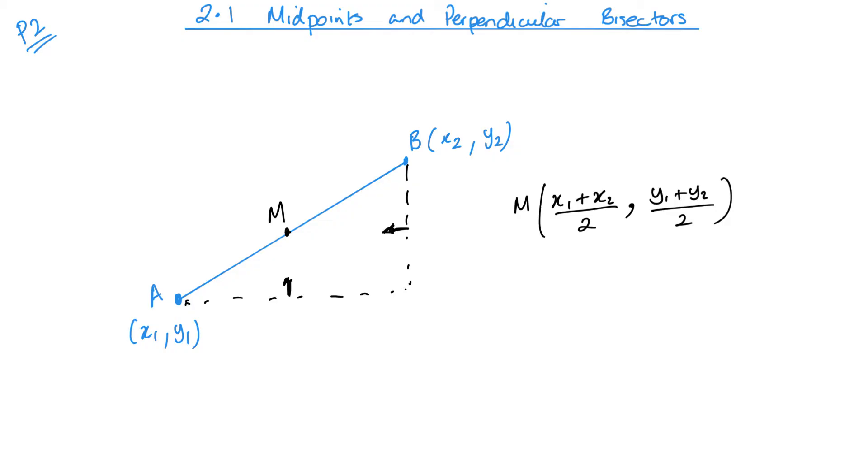Now, a perpendicular bisector, well, perpendicular means when something is at 90 degrees. So, perpendicular is 90 degrees. Bisector means to cut into two sections. Bi is your two. And in maths, when we talk about a bisector, it's to cut into two equal sections.